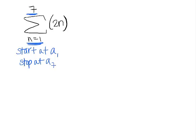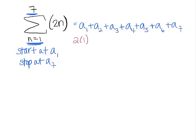So let's figure out what all those terms are. So this summation is telling me to add a sub 1 plus a sub 2 plus a sub 3 all the way to a sub 7. So let's figure out what all of those terms are. So a sub 1 means that n is 1. So this is going to be 2 times 1, which is going to give me 2.